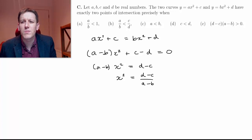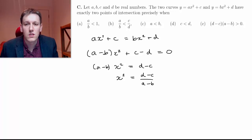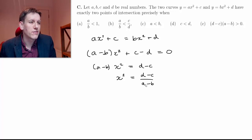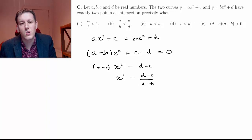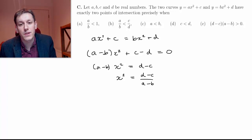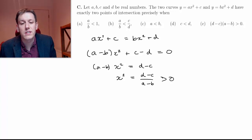Now when is this going to give me precisely two distinct real x values? I've got to be able to take the square root of the result, so d minus c divided by a minus b has to be strictly greater than zero.